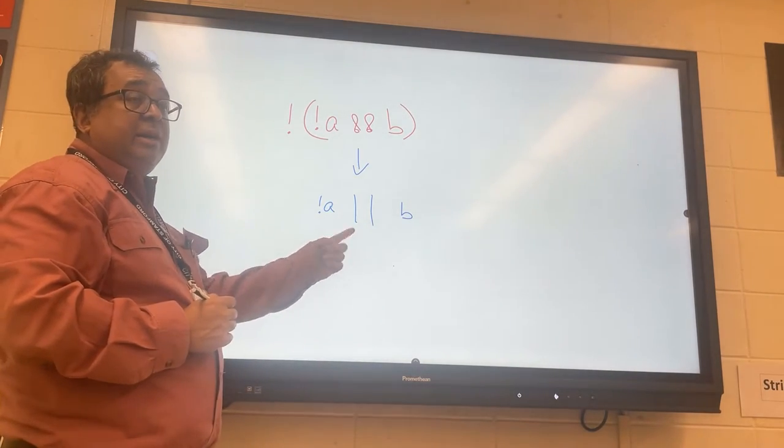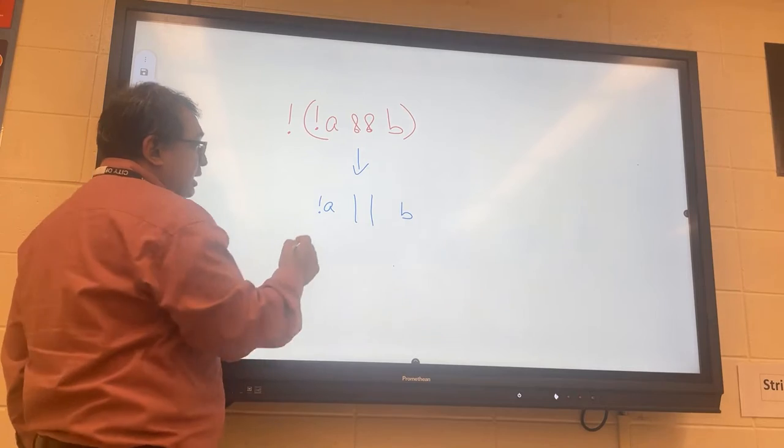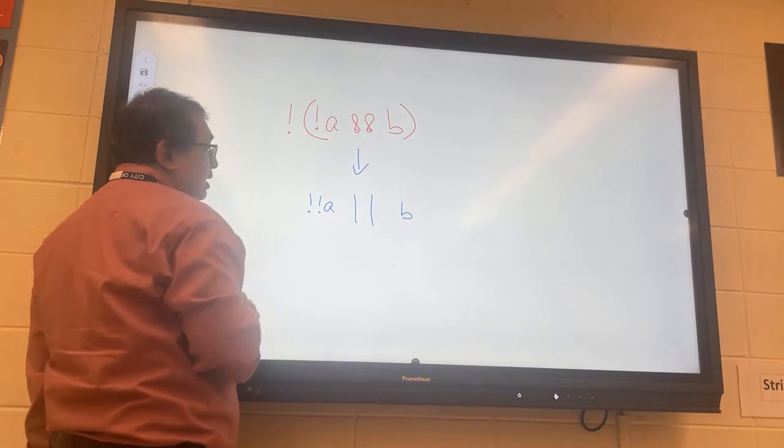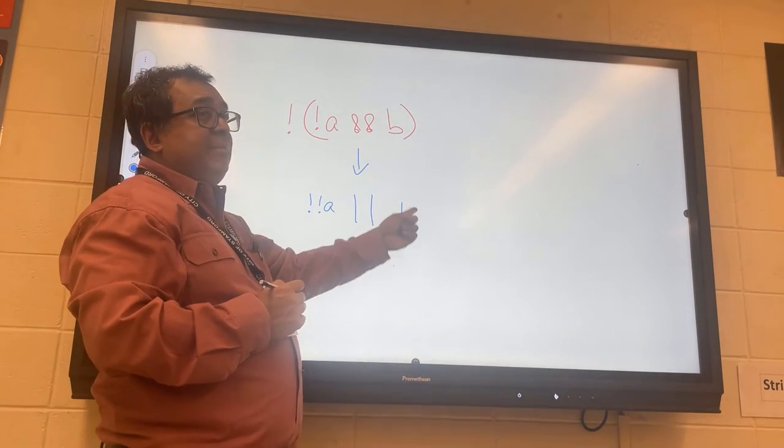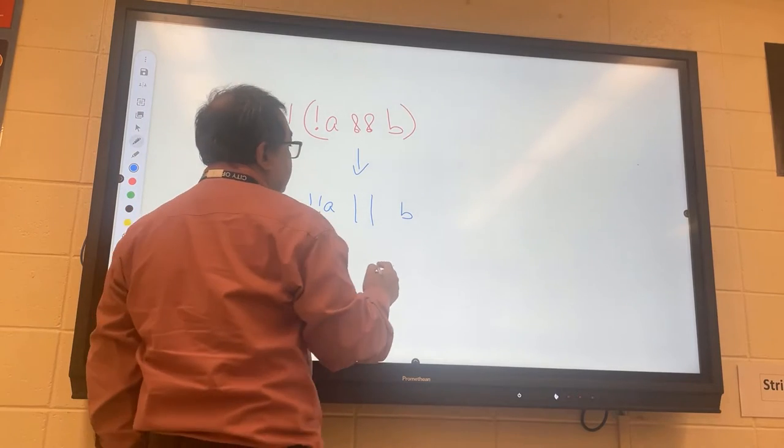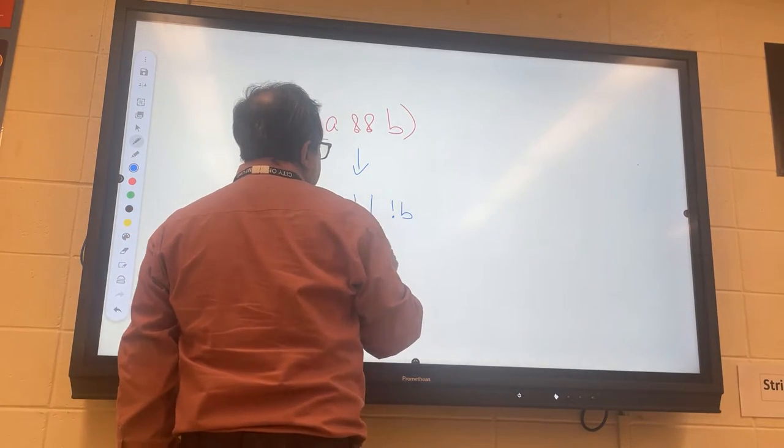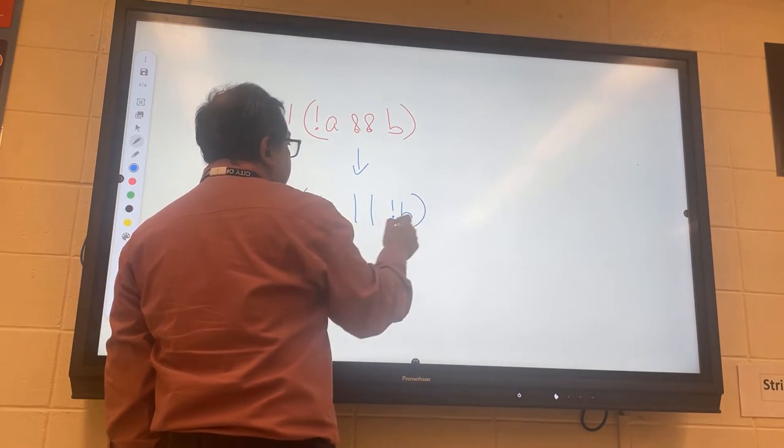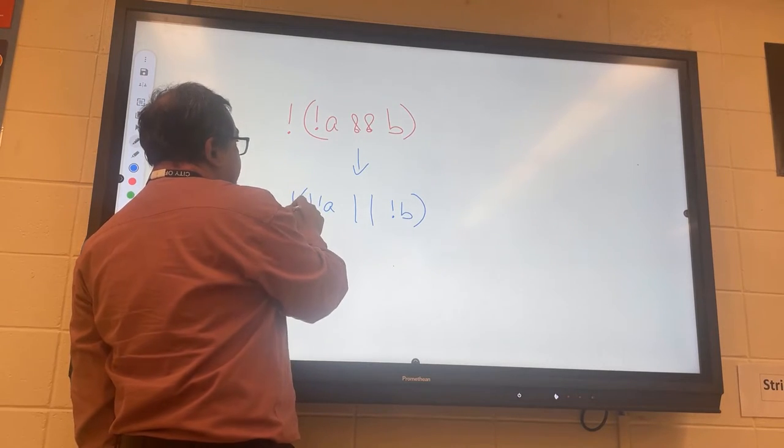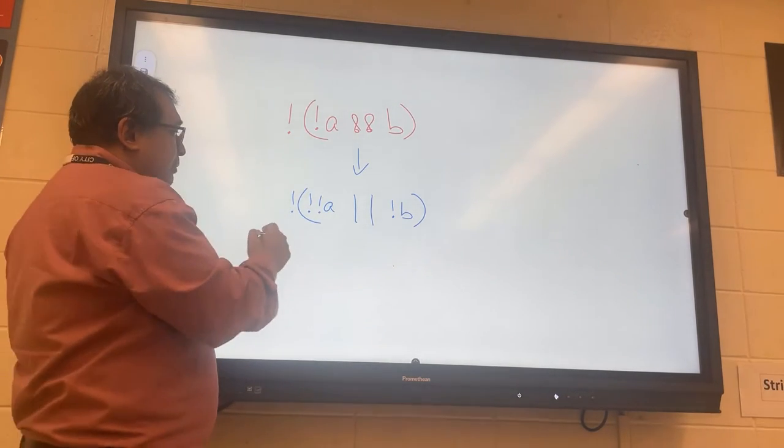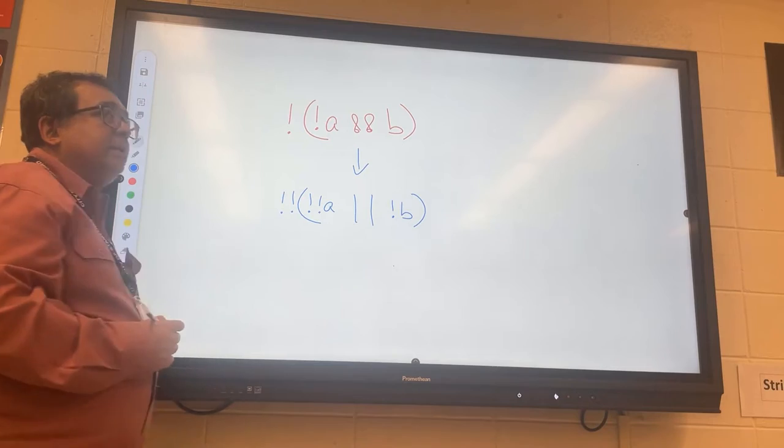I'm going to take the inputs and invert them. This is the existing input—NOT(A)—and I'm going to invert it by putting an inverter in front of it. Then the other input I have is B and I'm going to invert that. Finally, I'm going to invert the output. The output was originally like this, and so I'm going to invert it like that.